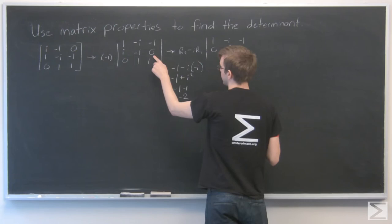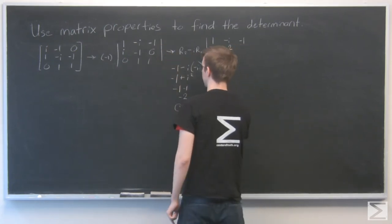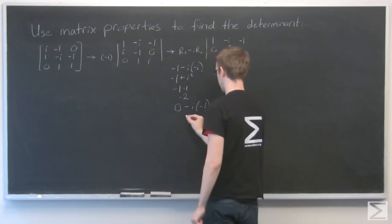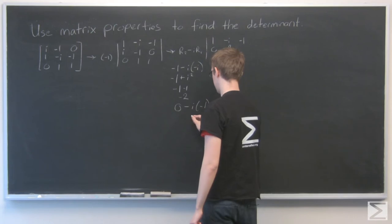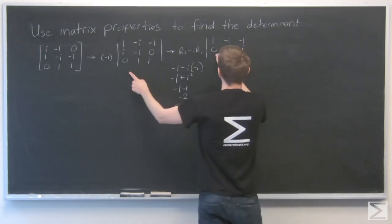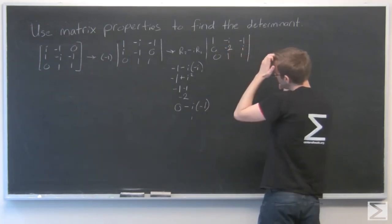Now, zero minus i times row one, that's zero minus i times negative one. And that looks just like i. And I'll keep this zero, one, one.